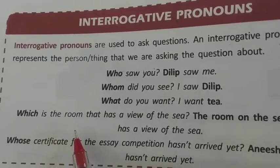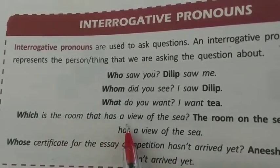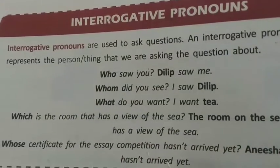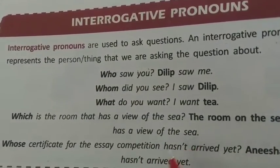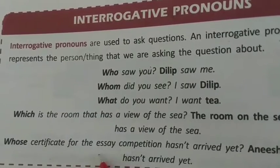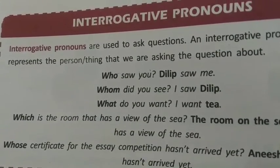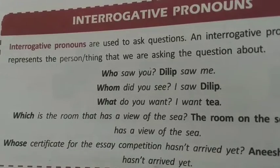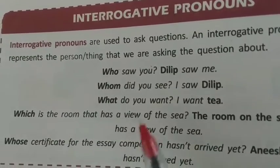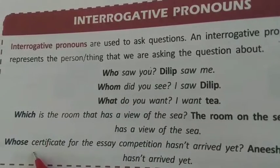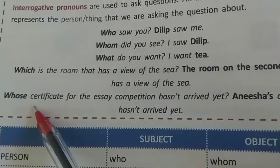'Which is the room that has a view of the sea?' - The room on the second floor has the view of the sea. 'Whose certificate for the essay competition hasn't arrived yet?' - Anisha's certificate hasn't arrived yet. आपने देखा कि ये जो who, whom, what, which और whose हैं, ये question put up करने में काम आ रहे हैं और relation show कर रहे हैं.